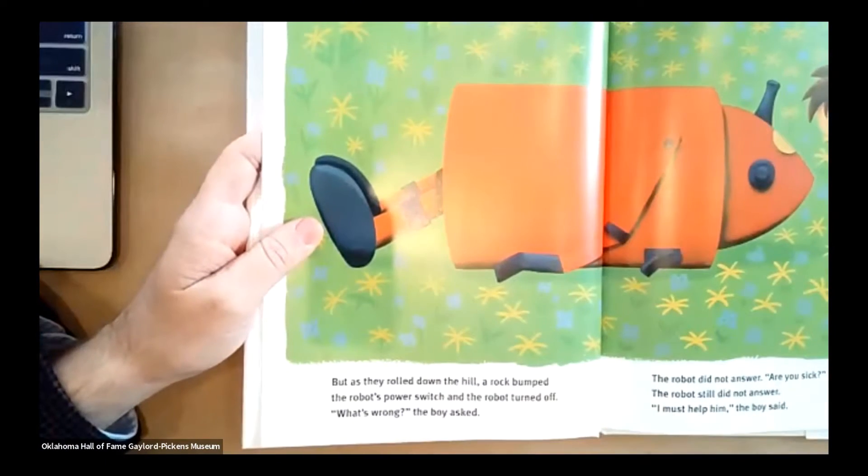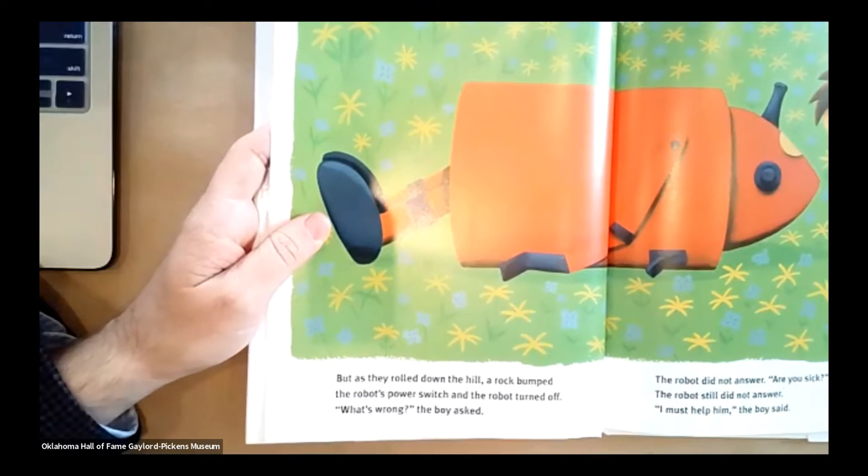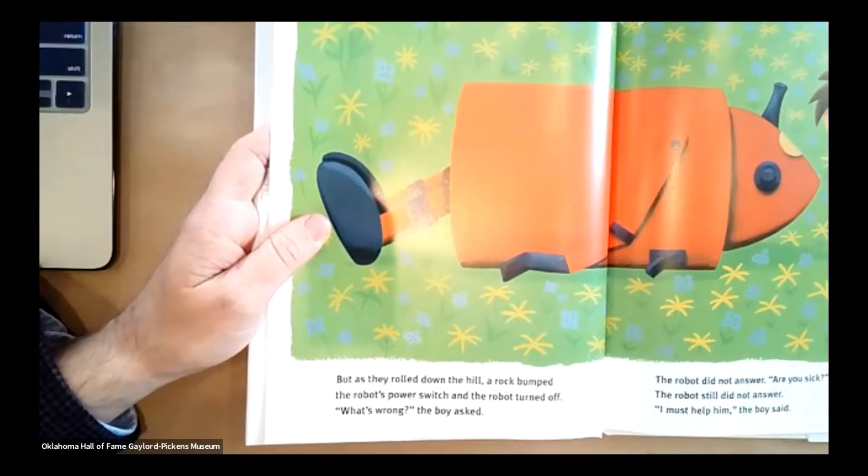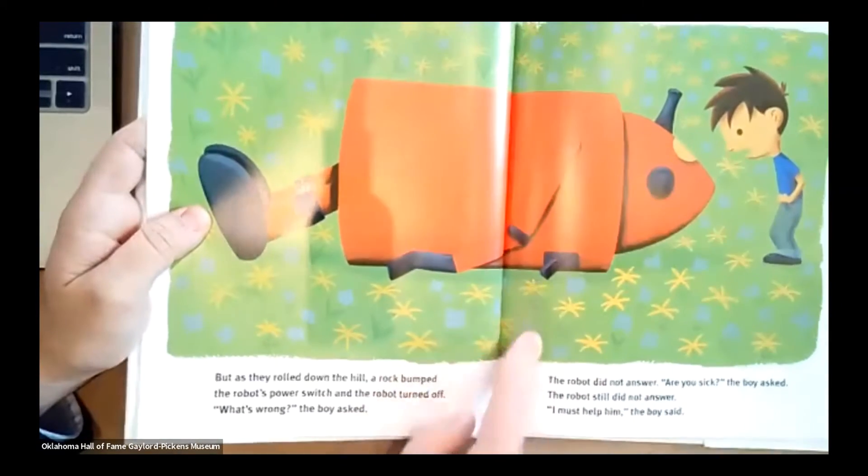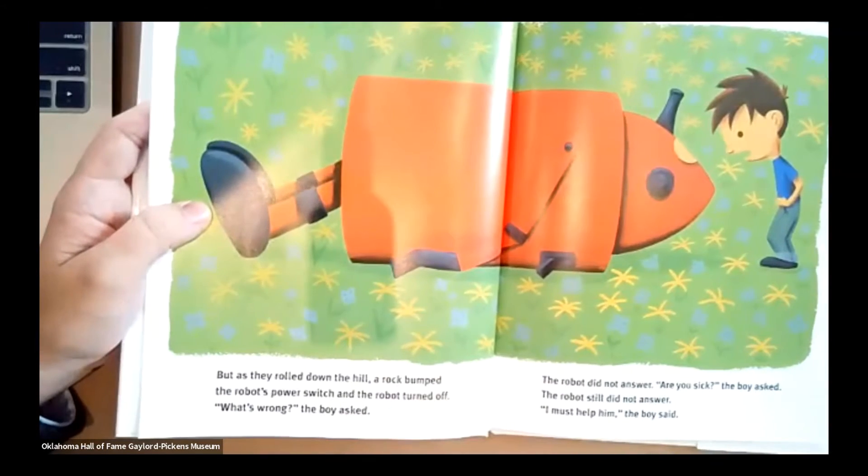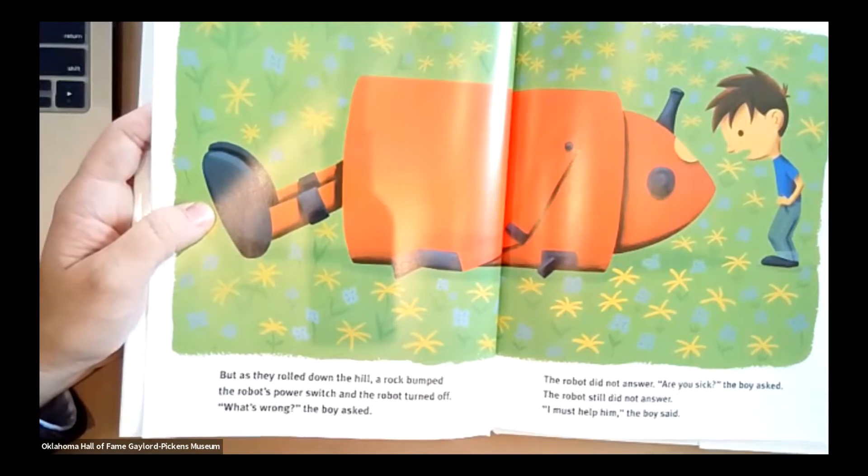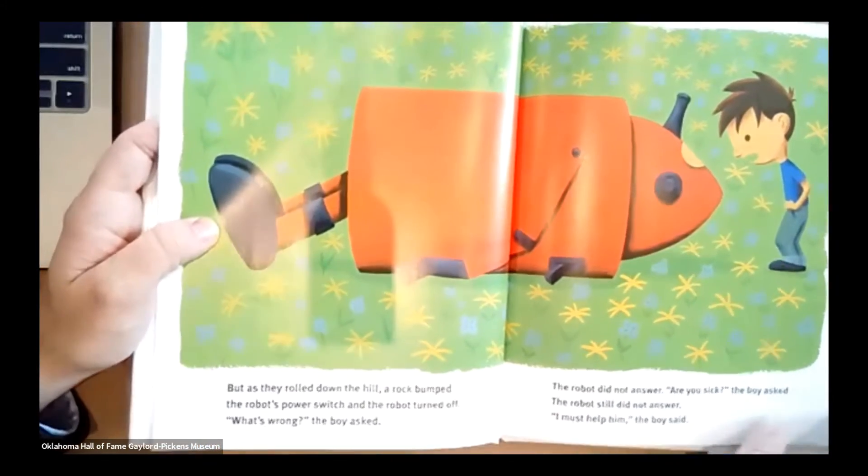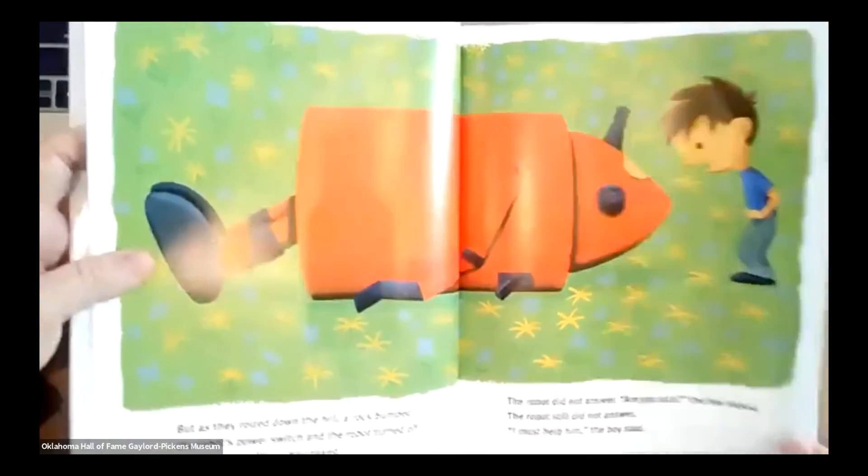But as they rolled down the hill, a rock bumped the robot's power switch and the robot turned off. What's wrong? The boy asked. Oh, no. See his power switch? The robot did not answer. Are you sick? The boy asked. The robot still did not answer. I must help him, the boy said. Uh-oh. So how's he going to help the robot? Hmm. I'm not sure how I would help a robot.